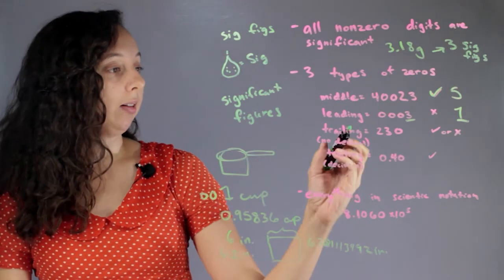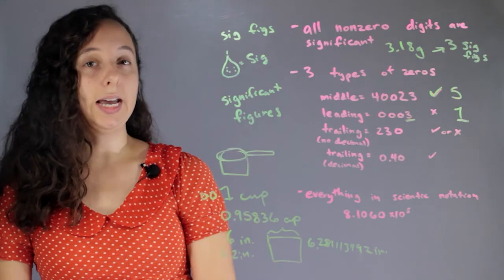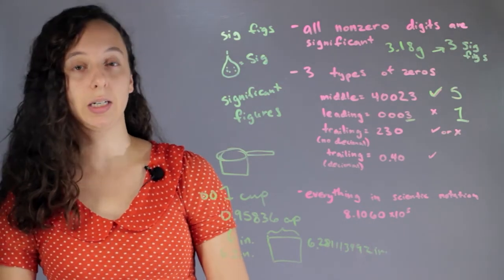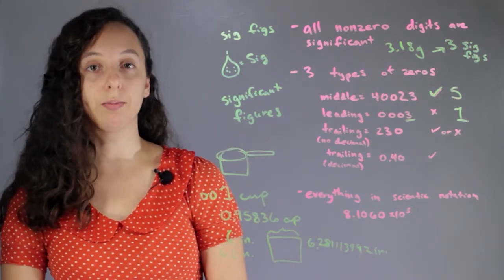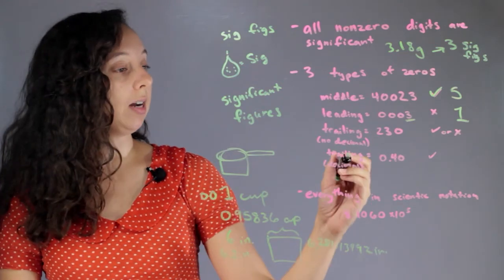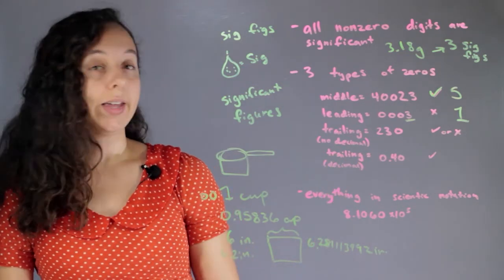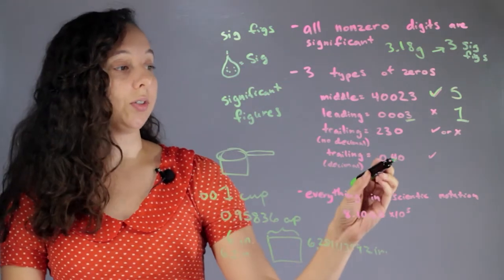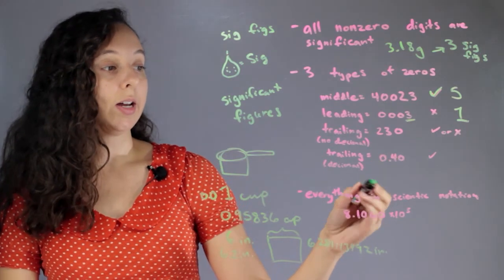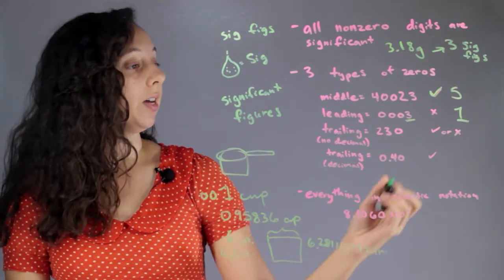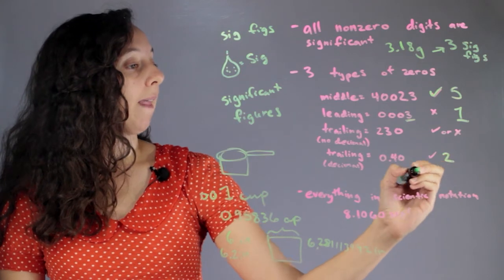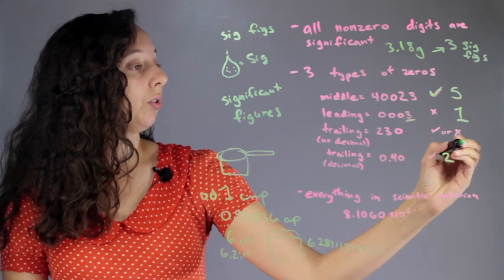Now trailing, so 230, that could count or it couldn't count. It depends on the problem. So that's some gray area. And then trailing with a decimal point, that does count. So if you're including this 0 after decimal point, it's definitely a sig fig. So this has 2 and this has 2 or 3.